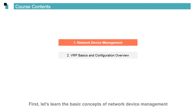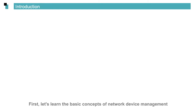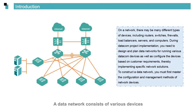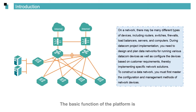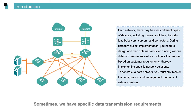First, let's learn the basic concepts of network device management. A data network consists of various devices, such as switches, routers, firewalls, and servers. These devices form a platform through which network services and applications can interact. The basic function of the platform is to achieve normal data communications on the network.